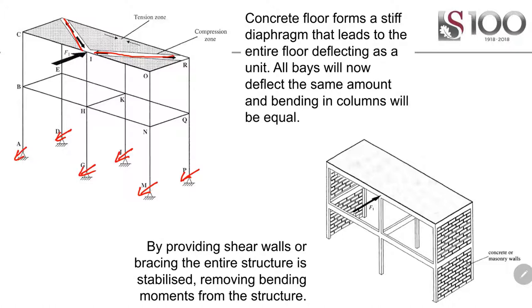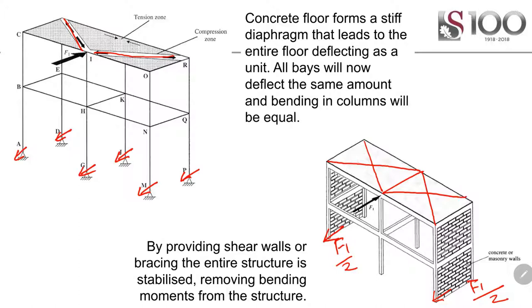If we add shear walls — brickwork in the outer bays — almost the entire load will be carried by those outer bays. The brick walls are much stiffer and attract all the load; virtually no load goes down the middle bay. Initially most load went down the middle bay; now none does. The concrete beams and columns haven't changed, but we've added stiffness in different places to attract the load. In steel structures you get a braced roof linked to vertical bracing on the side, carrying load to a vertical braced bay all the way to the ground.